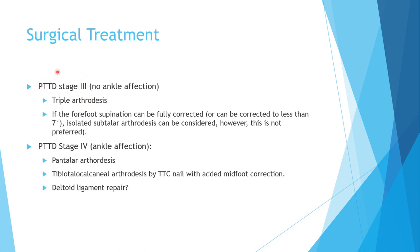To reiterate: stage three classic treatment is triple arthrodesis. Some surgeons perform dual arthrodesis (subtalar and talonavicular), leaving the calcaneocuboid unfused. Isolated subtalar arthrodesis alone is not recommended for this 3D deformity. For stage four with ankle involvement, the classic treatment is pantalar arthrodesis. Tibiotalar calcaneal fusion with TTC nail plus midfoot osteotomy is an alternative. Deltoid ligament repair has been discussed for stage four progressing from stage two, but pantalar arthrodesis remains the classic treatment.